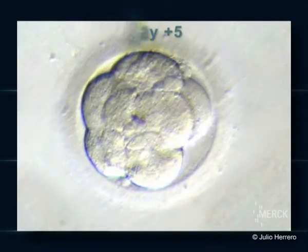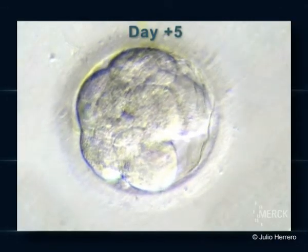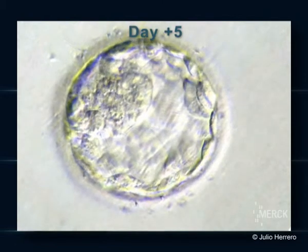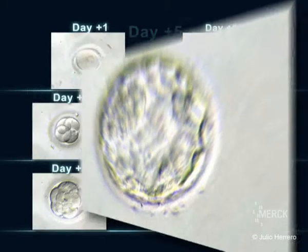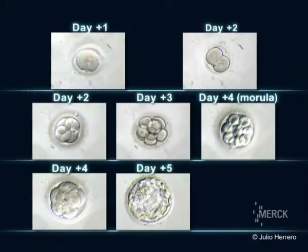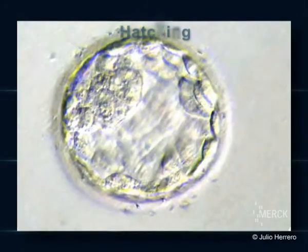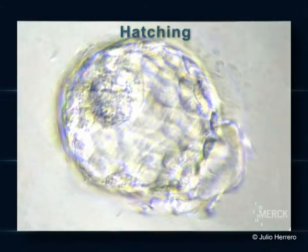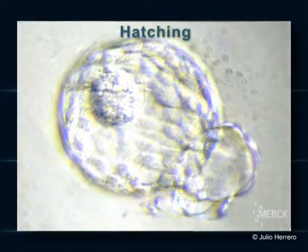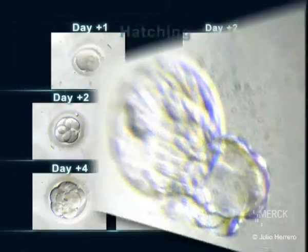On day five, the embryo contains more than 100 cells. In the center, there is a fluid-filled cavity. Finally, the blastocyst will shed the membrane that surrounds it. This is called hatching.